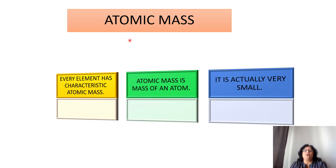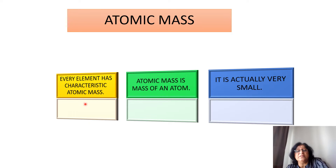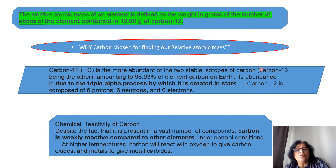Now let us see atomic mass. As the name indicates, atomic mass is the mass of an atom. Atoms are very small in size, so it is very difficult to find out the mass of an atom. Every element has a characteristic atomic mass, but since it is extremely small, we find out the relative atomic mass by comparing the mass of one element with another.